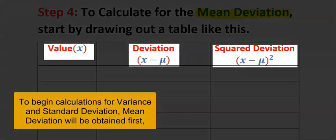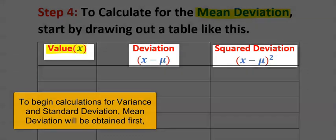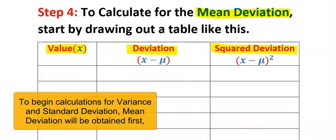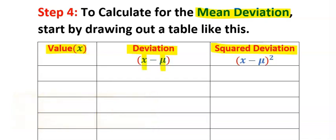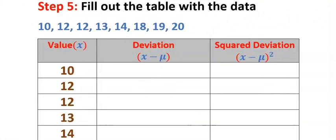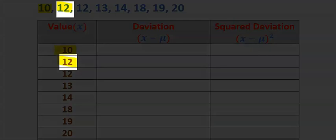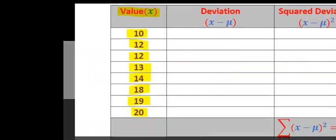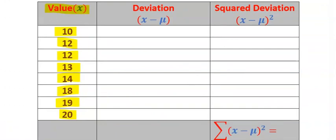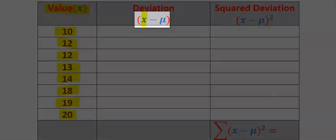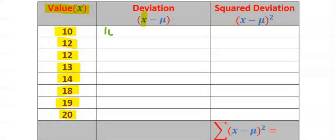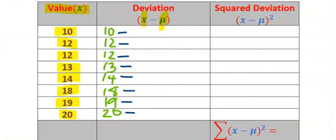In step four, start by drawing out a table with three columns: the value, the deviation, and the squared deviation. Deviation means each value minus the mean, and afterward you square it. In step five, fill out the table with the data — each of the data values goes into the table. After completing the x values, next complete the deviation column, where x represents values like 10, 12, and so on.